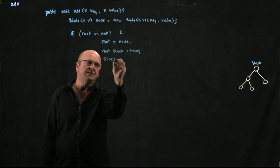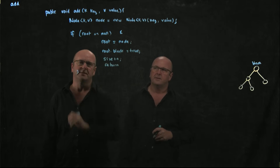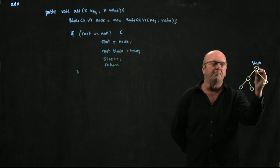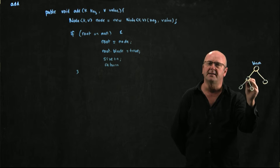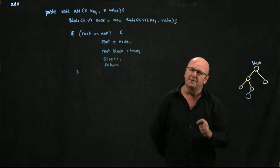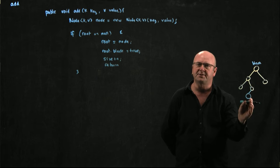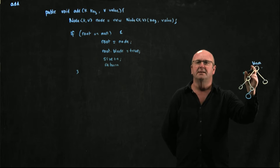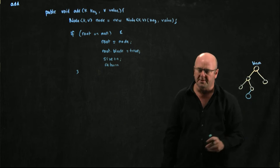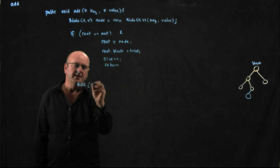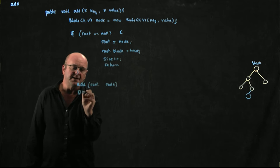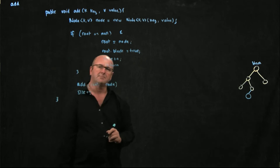So we set root.black equal to true, and we increment our size counter. If root is not null, we need to figure out where in our tree we're going to add the node. We check: are we bigger or smaller than the root value, then the next value down, and so on. The best way to do that is with a recursive method, because we don't know how big the tree is. We pass in the new node and start at the root, then recurse through the children appropriately. We call add passing root and the new node, then increment size.